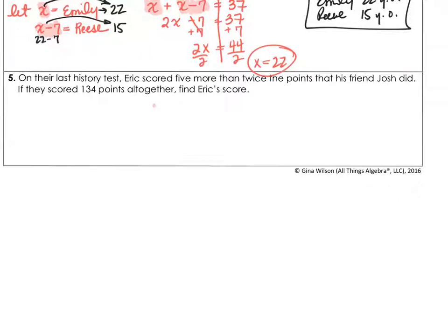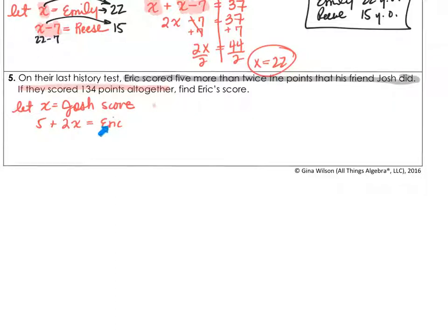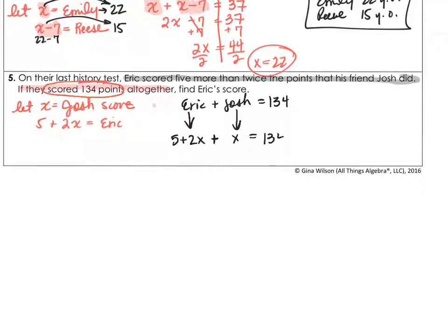For our last example: on their last history test, Eric scored 5 more than twice the points that his friend Josh did. If they scored 134 altogether, find Eric's score. So let x equal — always have to let x equal. Eric scored 5 more than twice Josh, so Eric is 5 plus 2x, which means x has got to be Josh's score. And Eric is 5 more than twice Josh. If they scored 134 altogether, that means Eric's score plus Josh's score is 134. Eric is 5 plus 2x and Josh we called x, and that is equal to 134.